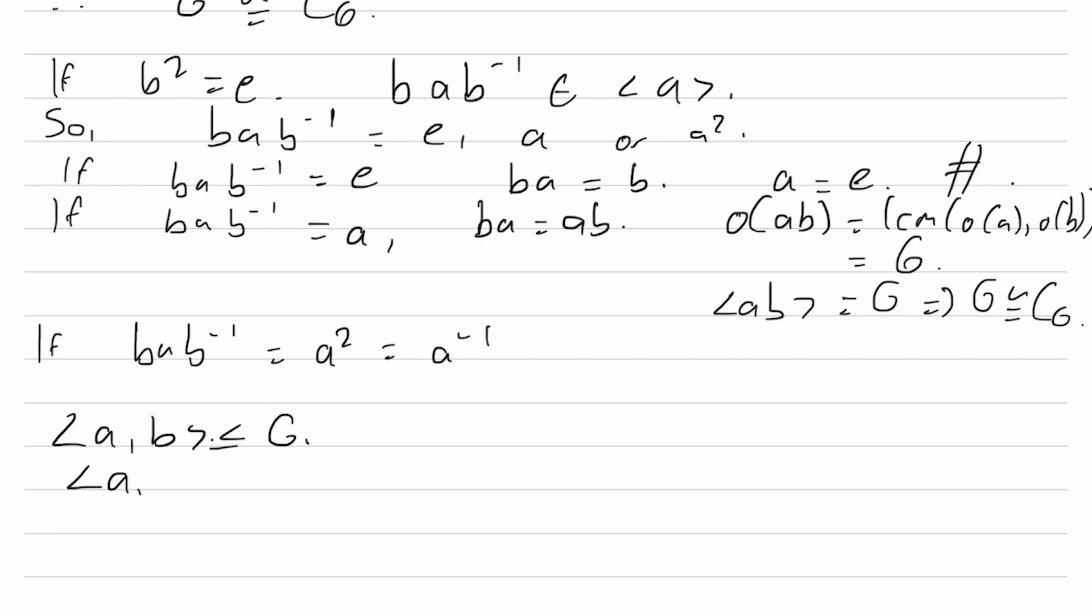Well, if we write this out in full, it's going to be the group generated by A and B such that A cubed is B squared, which is the identity, and BAB inverse equals A inverse. Well, what does this presentation look like? This is just the presentation of D6.